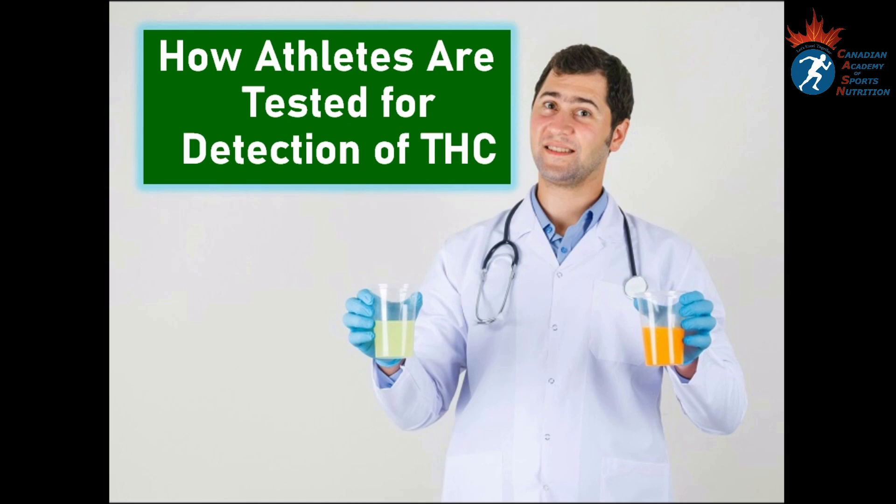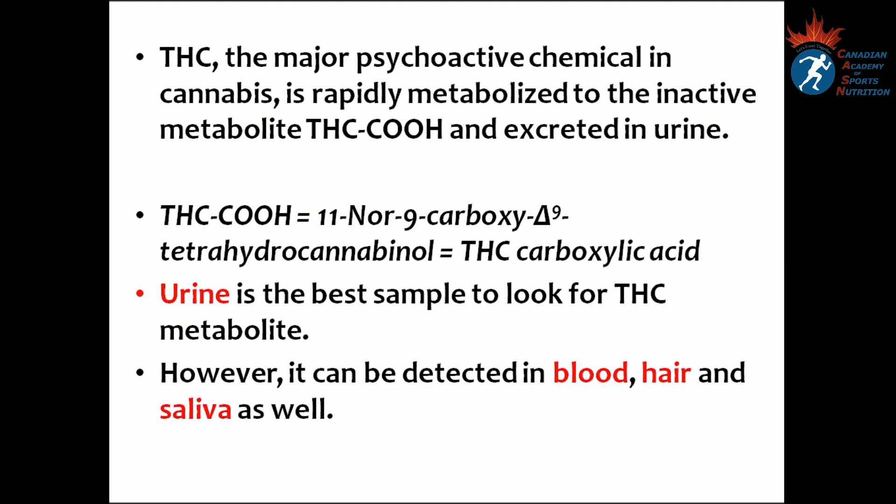How are athletes tested for detection of THC? THC, which is the major psychoactive chemical in cannabis, will be rapidly metabolized to an inactive metabolite: tetrahydrocannabinol carboxylic acid. In general, urine is the best sample to look for THC metabolite. However, it can also be detected in blood, air, and saliva.